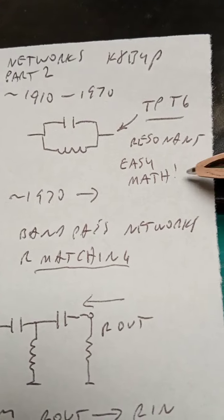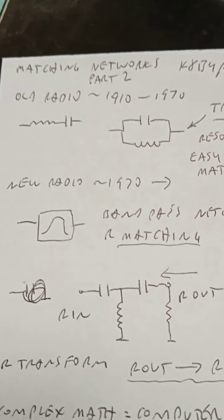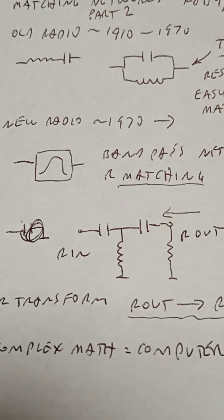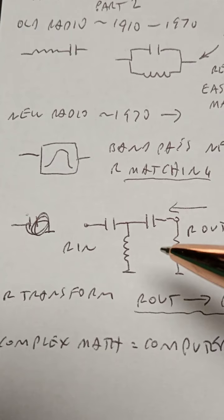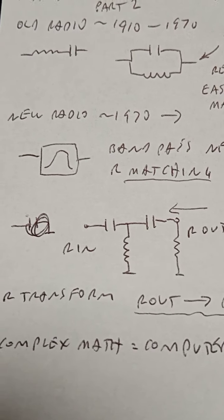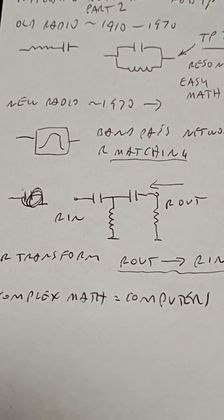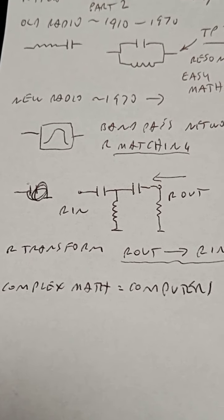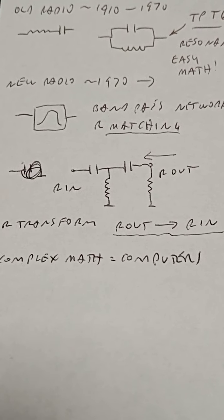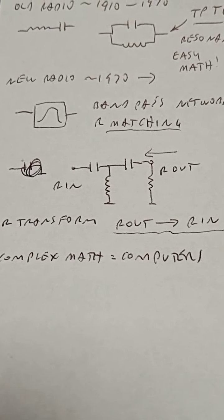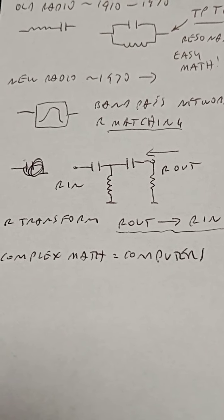It's called tune plate, tune grid, resonant, very simple math. More complex networks like this T network and larger expansions into bandpass networks are very difficult to calculate because they are a pile of complex math. They basically couldn't be solved until the computer era, and that's why about in the 1970s we began seeing bandpass networks in radio transmitters.